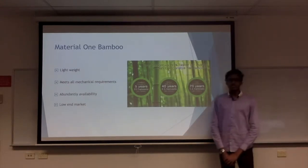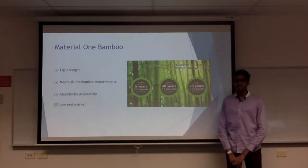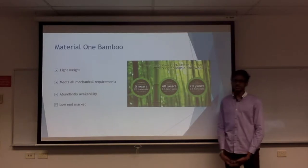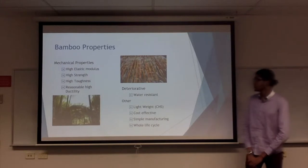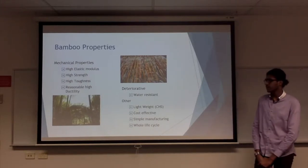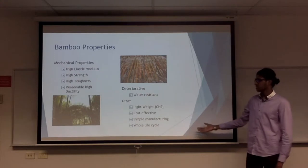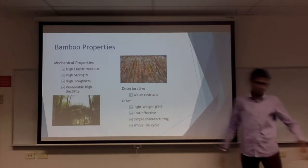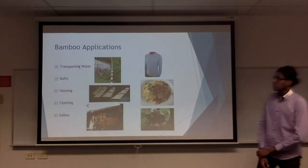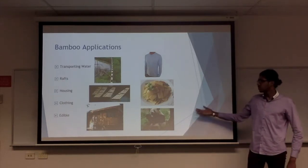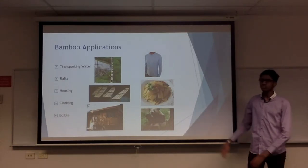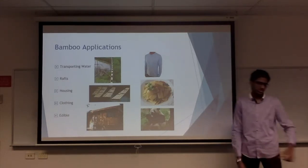The first material is bamboo. Bicycle frames are likely to be made from a variety of materials from carbon fibre to aluminium, so why hasn't bamboo been considered? Bamboo boasts a large amount of mechanical properties, from mechanical to deteriorative and other properties, as displayed here. Bamboo has been used for a variety of applications, and the most important to us are the structural aspects.